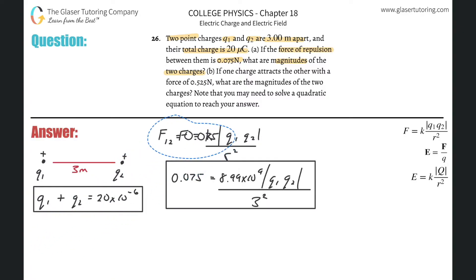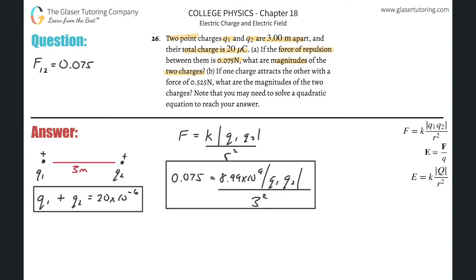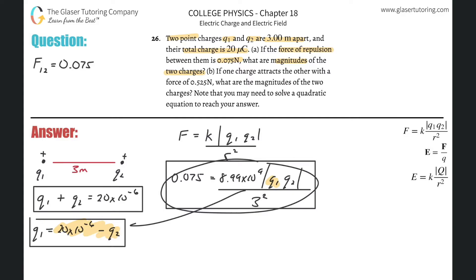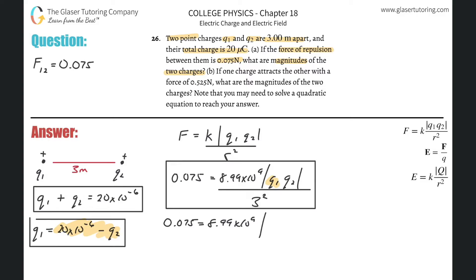So let's solve the first equation for Q1, giving us Q1 equals 20 times 10 to the minus 6 minus Q2. We then substitute that expression into the Coulomb's Law formula. So we now have 8.99 times 10 to the ninth multiplied by the absolute value of (20 times 10 to the minus 6 minus Q2) times Q2, all divided by three squared.